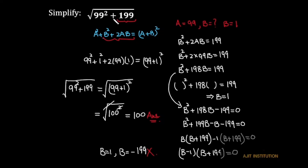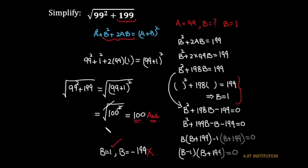We discard b equals minus 199 because there is a plus sign in the original expression and this negative value would make it negative. So we only consider b equal to 1. Whether found by guessing or factorization, the final answer is 100. I hope you liked this video, thanks for watching.